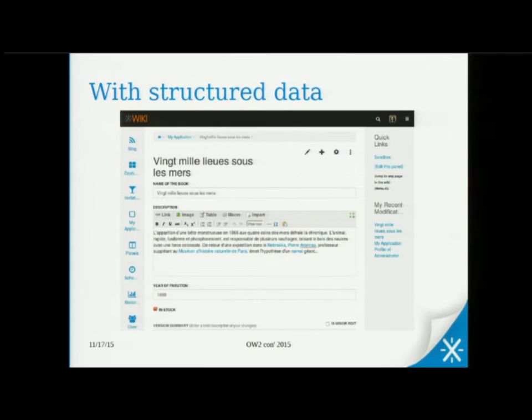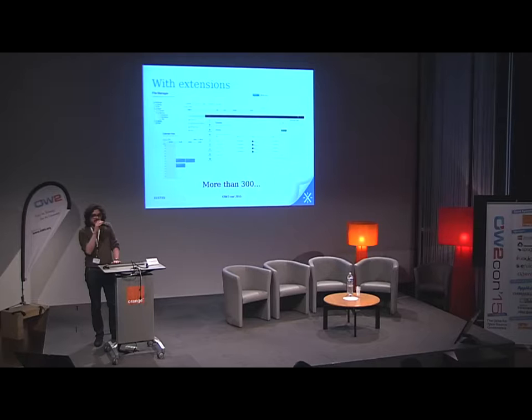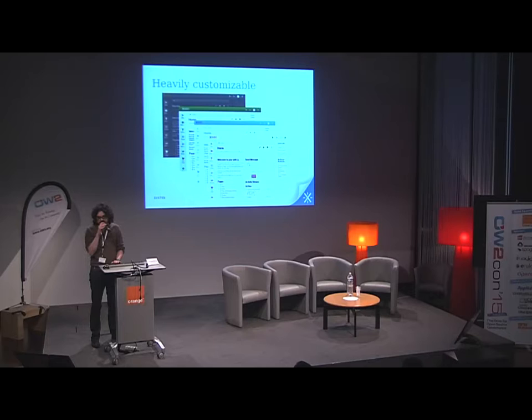It's easy to perform filters and queries on the fields. If I want only the books currently in my stock, I can do that easily. If I want all books published before a certain date, it's easy. Enterprises love that because they can structure their knowledge. It comes with more than 300 extensions in the repository right now — file manager, forums, meeting application, and so on.